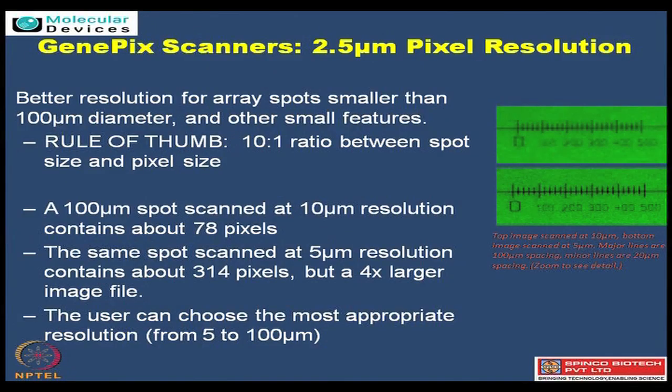Our scanners range from 5 micron resolution to 2.5 micron resolution. The basic rule for all resolutions is that the size of your spot, be it protein or RNA, should be 10 times that of the resolution you are scanning with. Interestingly, most DNA spots are less than 50 microns and most protein spots usually stand at 200 microns. So essentially the rule is 10 to 1 - if 10 is the spot size then 1 is the resolution.